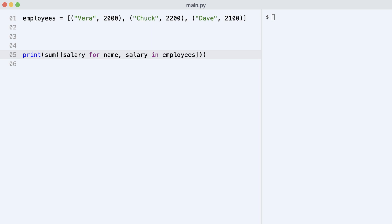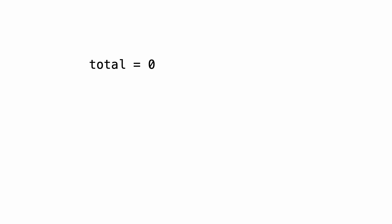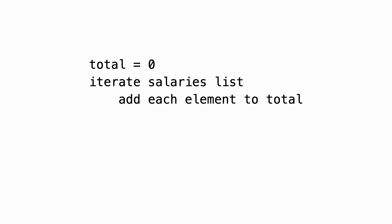But what is it that the sum function does? Without looking it up, I guess it does something like this: it sets a value to 0, gets an iterator from the salaries list and starts iterating, adds each element to the total, and returns the total. Notice that the sum function only needs one element at a time in the loop. So wouldn't it be nice if the sum function could ask for the next salary when it needs it, instead of getting a list of all salaries?